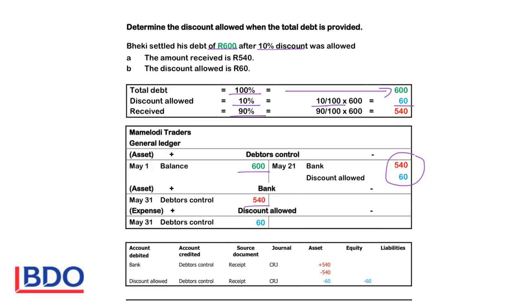The bank is debited to increase the money in the bank. Discount allowed is debited to increase the expense. Debtors control is credited to decrease the asset because the debtors owe less money — we change one asset into another asset. We will issue a receipt as proof of payment and record this entry in the cash receipts journal. Discount allowed is debited to increase expenses; expenses decrease profits so equity will decrease. Debtors control is credited to decrease the amount that debtors owe.